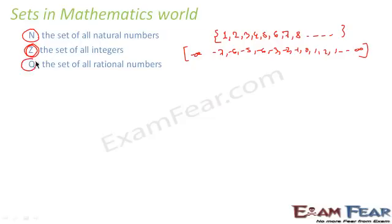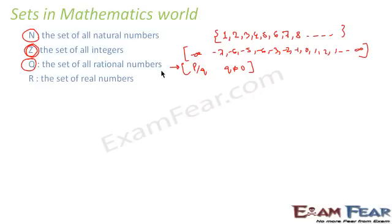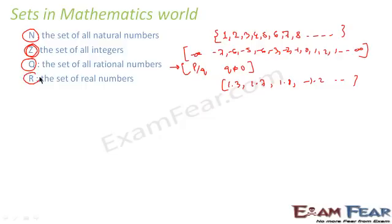Similarly, Q is the set of all rational numbers. A rational number is anything that can be represented in p/q form where q is not equal to 0 — because if q equals 0 it becomes infinite. So anything in this form is called a rational number. Similarly, R is the set of all real numbers. Anything that can be represented on a number line is a real number — for example, 1.3, 1.7, 1.8, minus 1.2. Please make a note of all these letters: N, Z, Q, R. We will be using them in our next chapters.